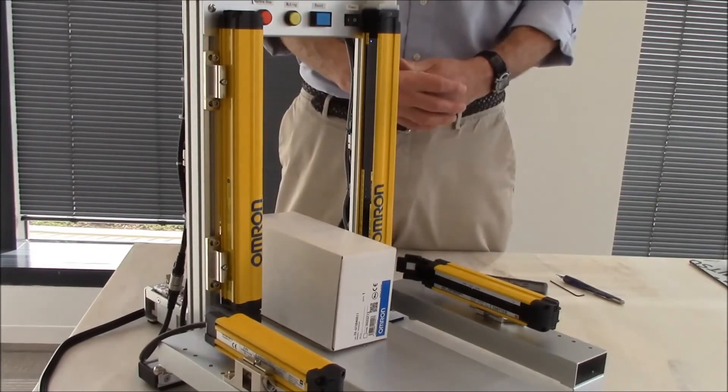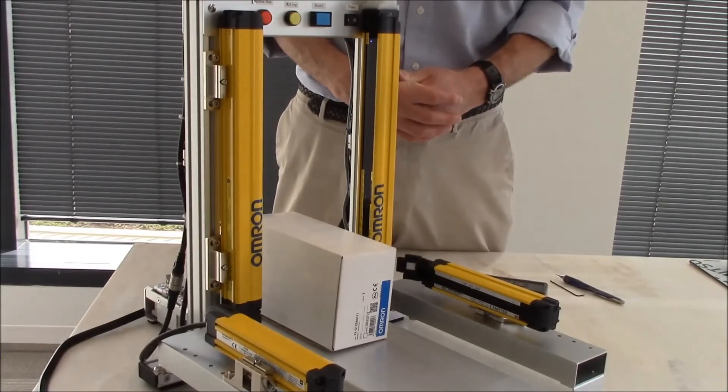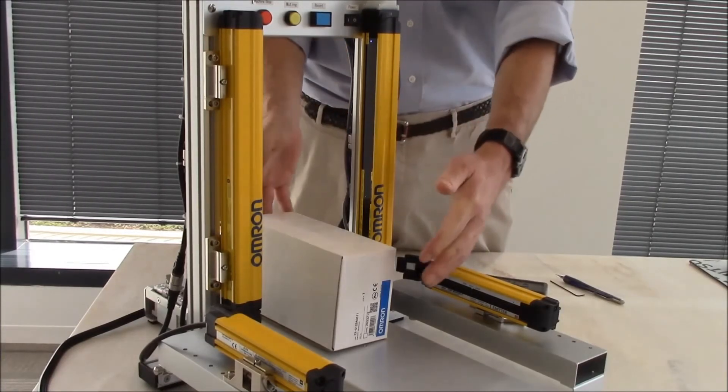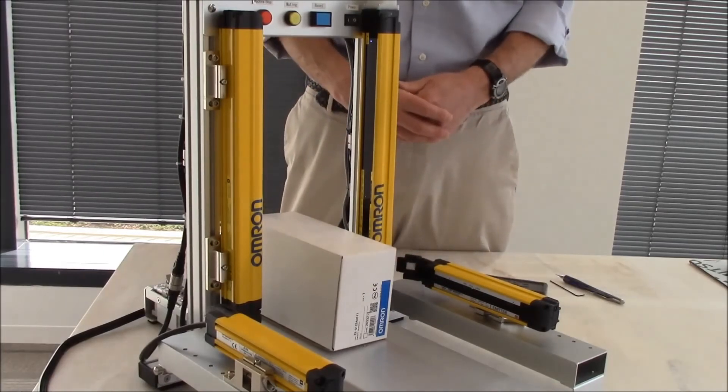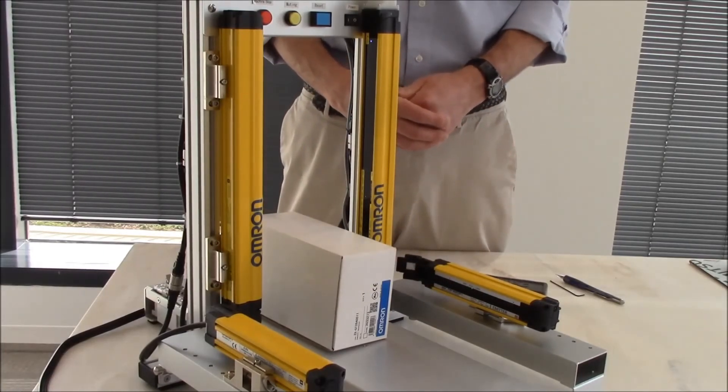This ends the demonstration on how to set up the F3SG safety light curtain using the fixed blanking option. Thank you very much and have a great day.